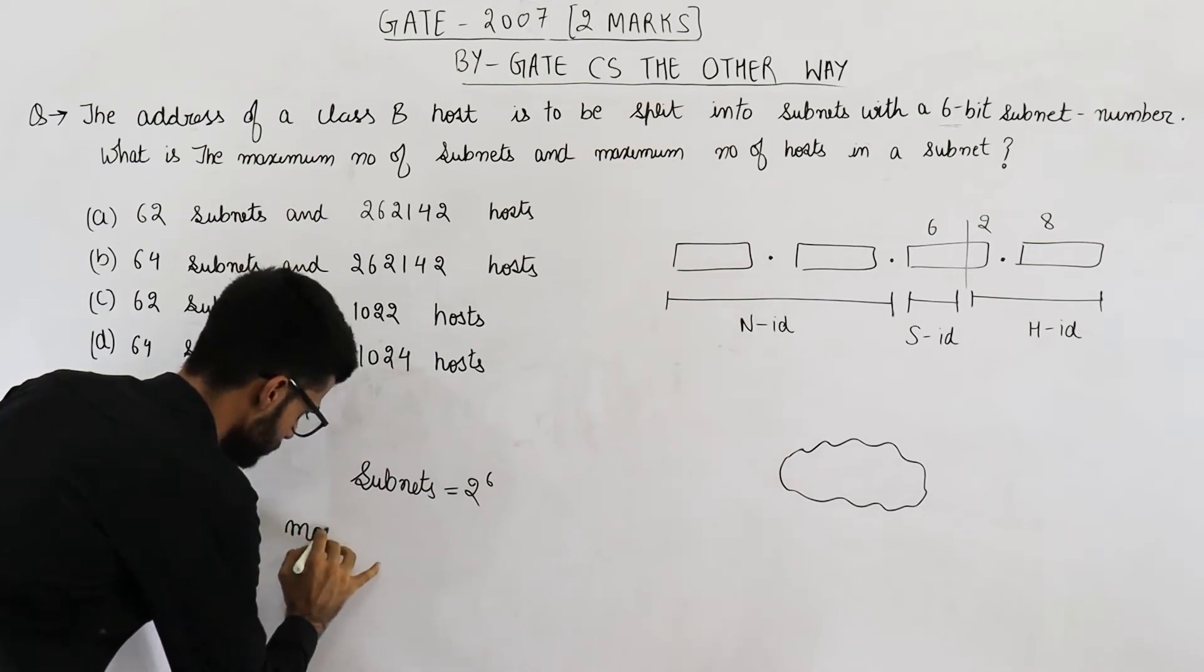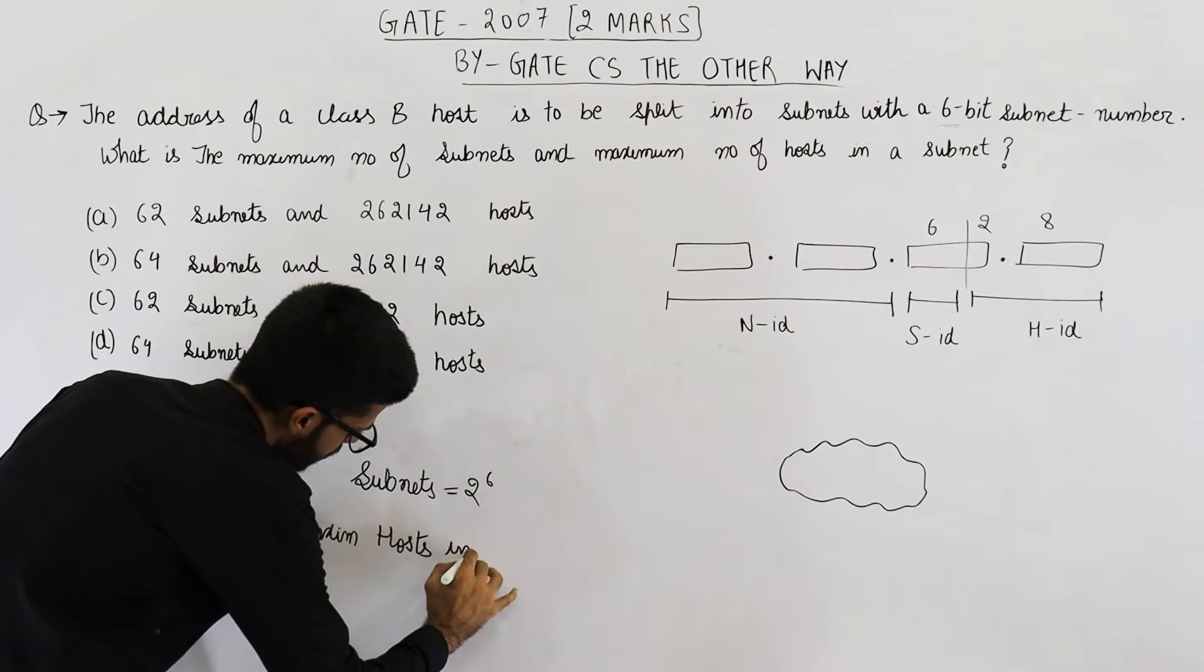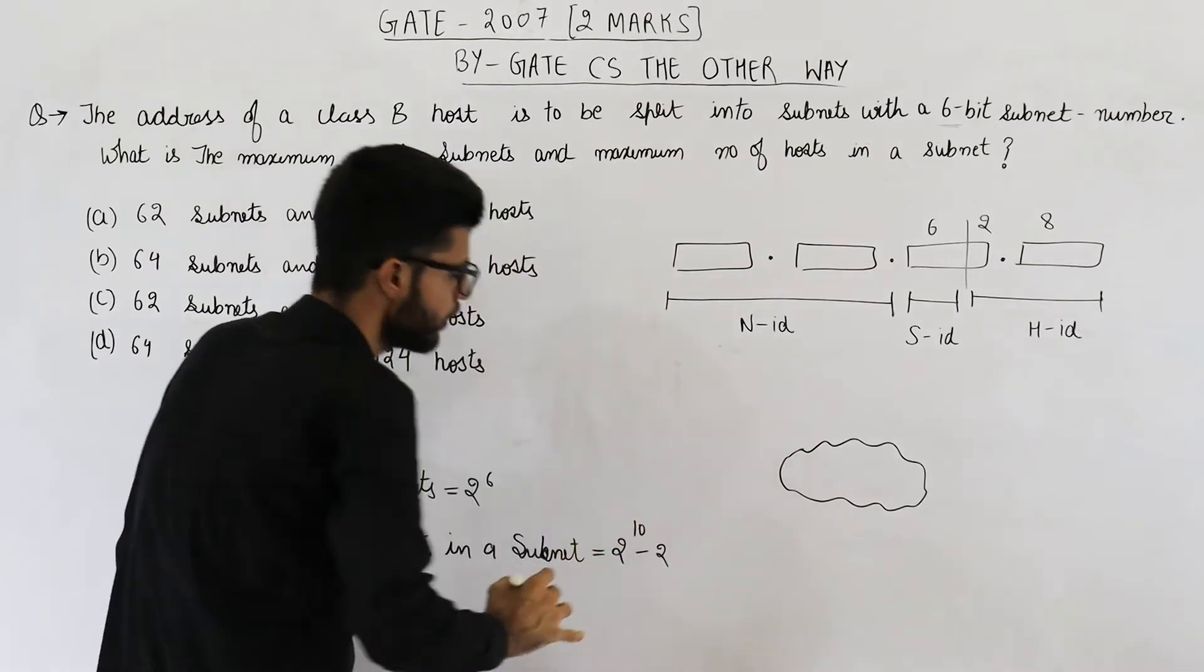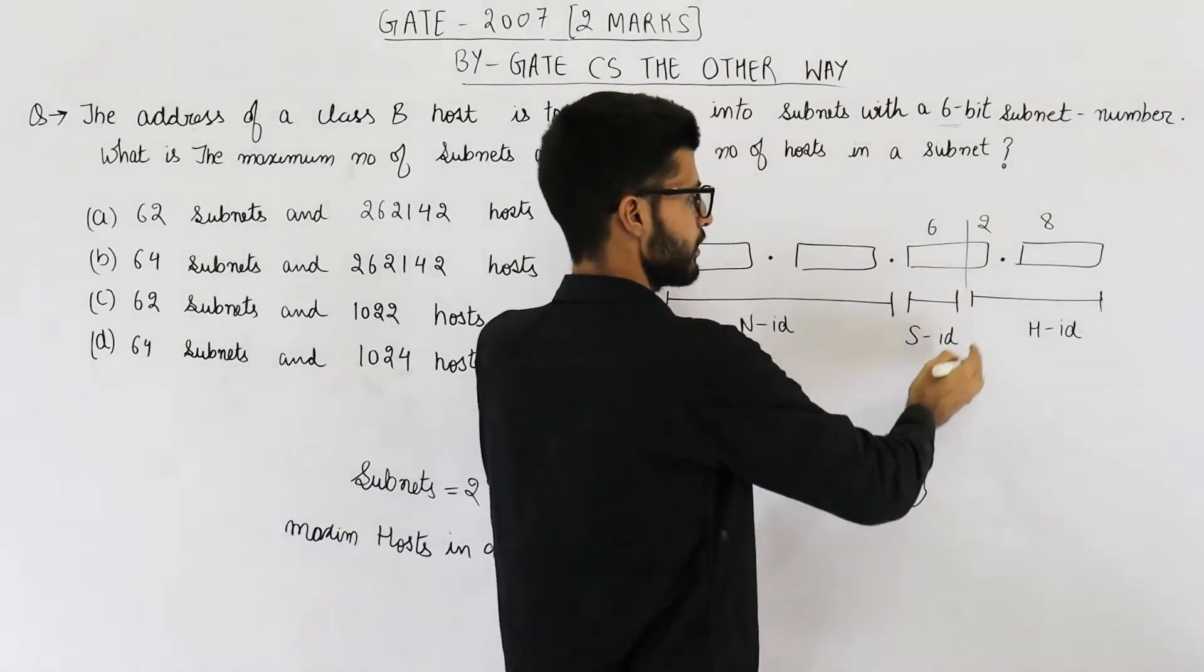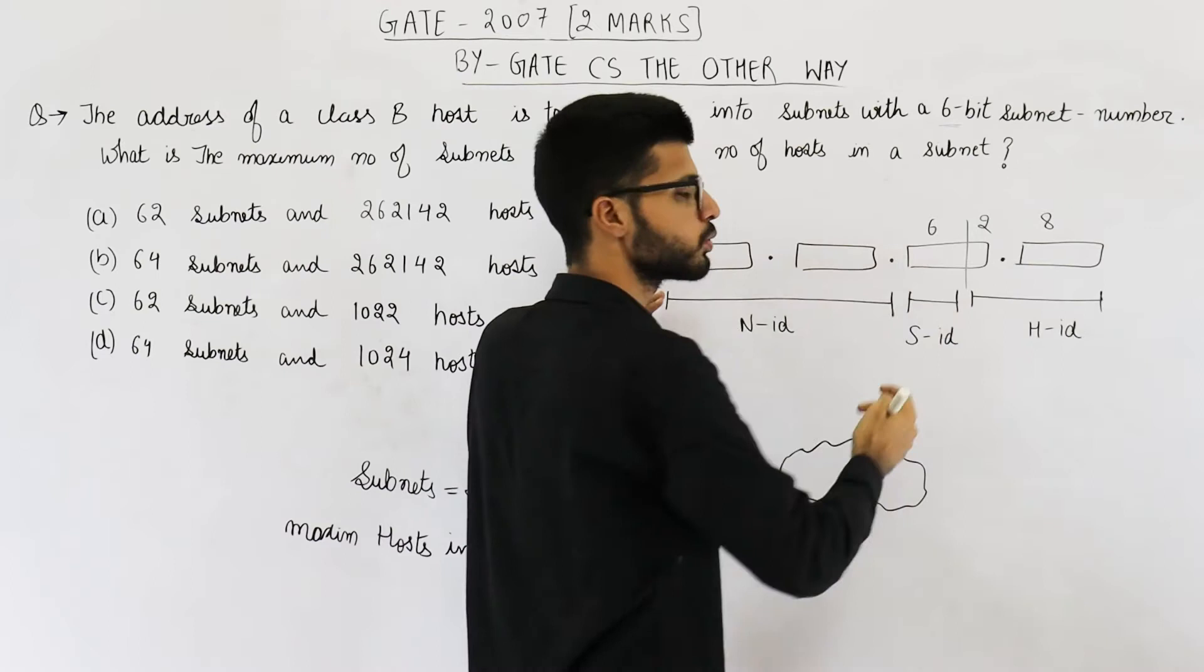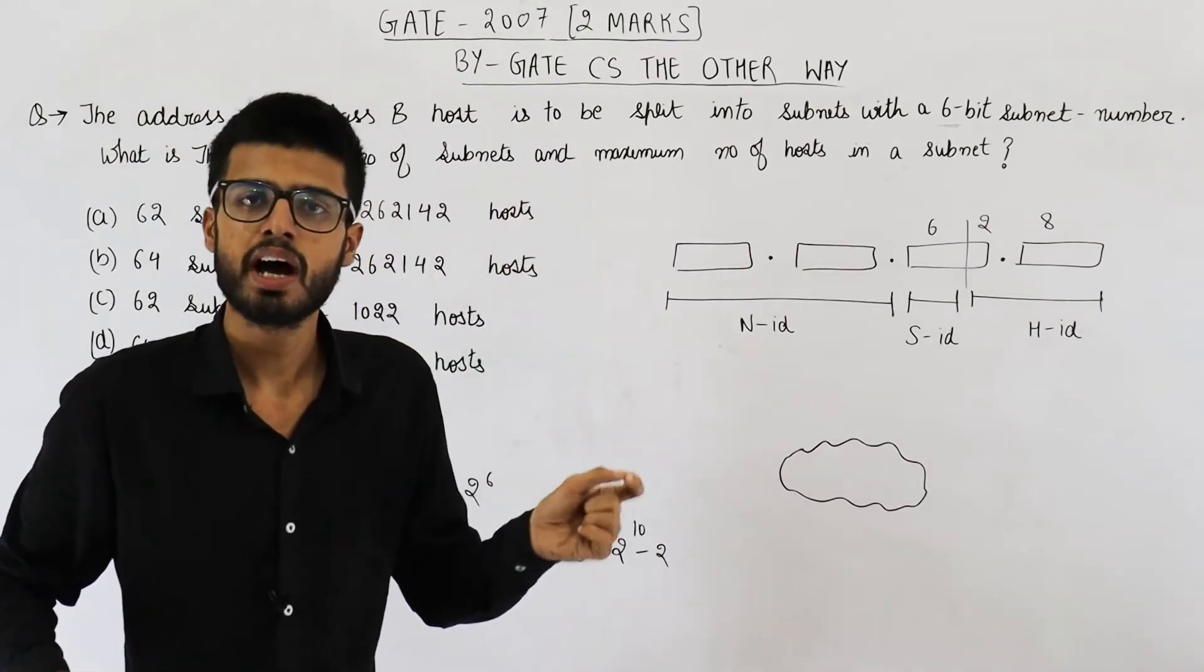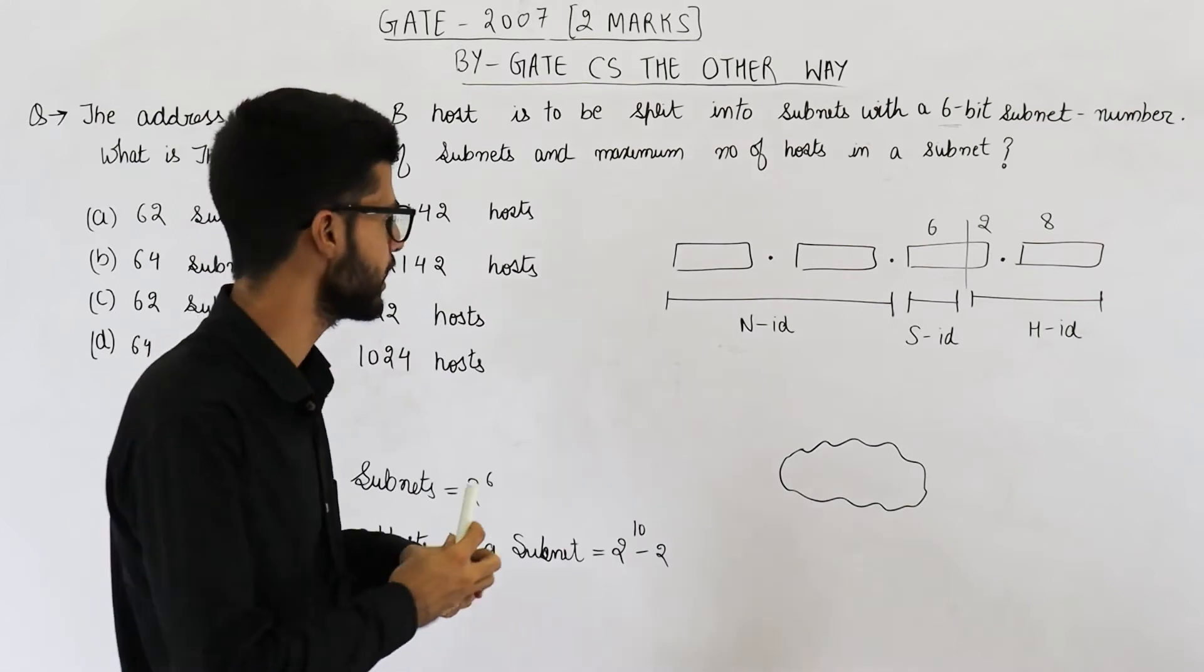So maximum hosts in a subnet, it is going to be 2 raised to the power 10 minus 2. Because now this total part, that means 16 plus 6, these bits will kind of act as the network ID. And these are the host ID bits. In host ID, you have 10 bits. That means maximum 2 raised to the power 10 IP addresses are there.